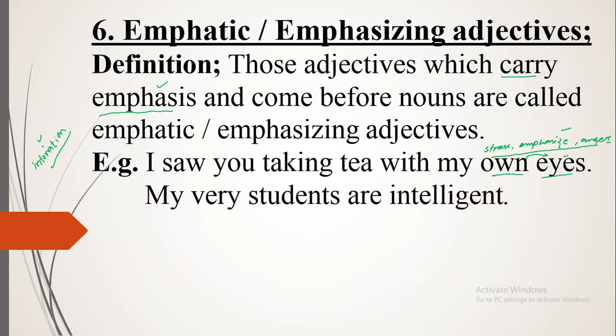The second example: 'My very students are intelligent.' If someone says your students are not intelligent, you become emotional and angry and say, 'My very students are intelligent — how could you say that?' So 'very' is your emphatic adjective, adding something to the meaning of 'students' and showing angerness. Note that 'very' is normally an adverb of degree, but here it is used as an emphatic adjective before a noun to show anger.